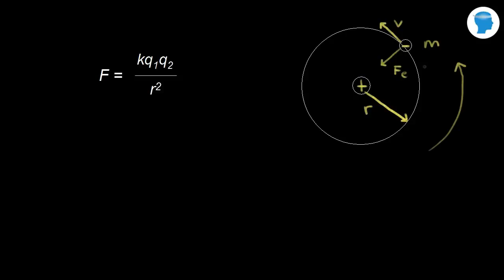We can find the electric force using Coulomb's Law. The electric force is equal to K, a constant, times Q1 — the charge on the proton — times Q2 — the charge on the electron — divided by the distance between those two charges squared. This is Coulomb's Law.